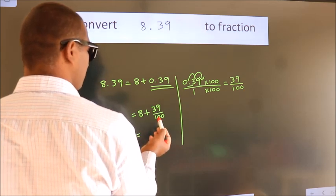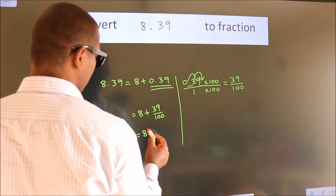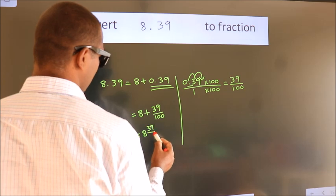8 plus 39 by 100. In mixed fraction, it is 8 and 39 over 100.